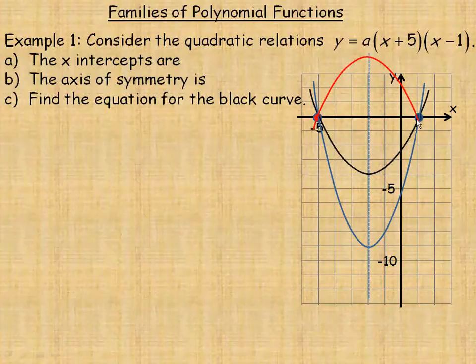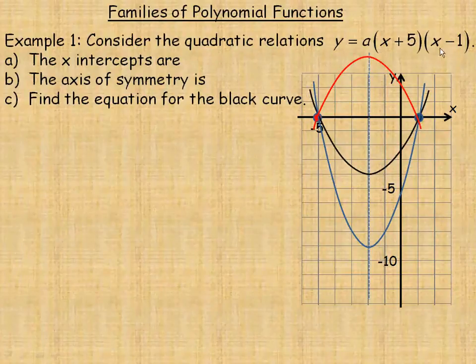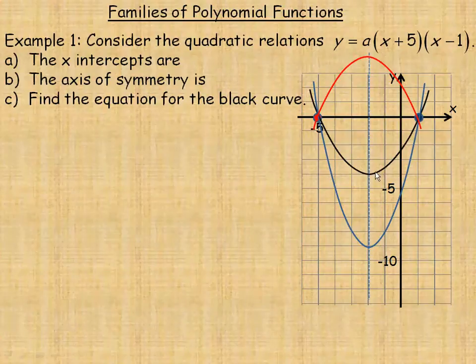For that reason, they're all said to be members of the same family because they have identical intercepts. Since negative 5 is an intercept, if we write the equation in intercept or factored form, it'll be y equals a times x plus 5. Remember, it's x minus the intercept, so x minus negative 5 is x plus 5, and 1 is the other intercept, so x minus 1 is the other factor. This is the intercept form for any member of this family.